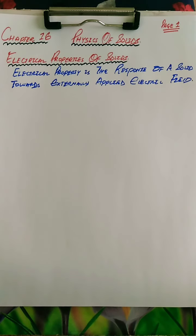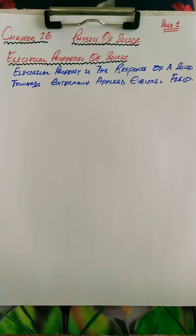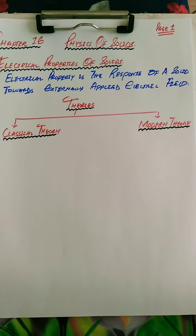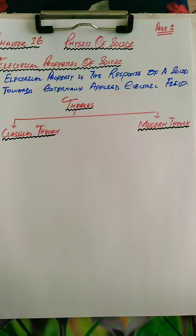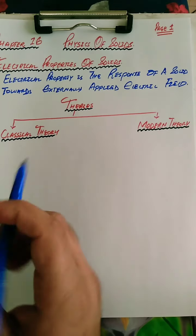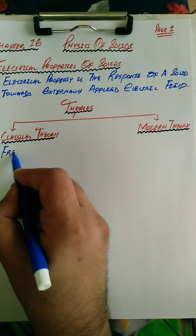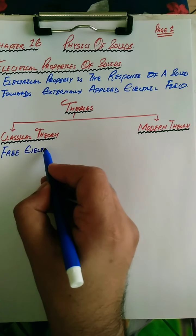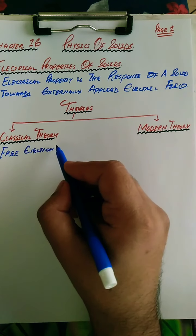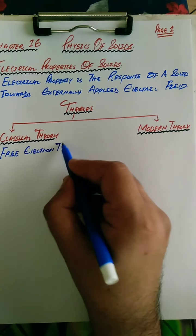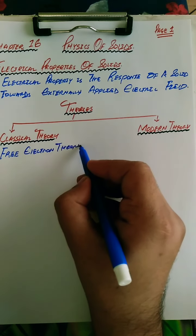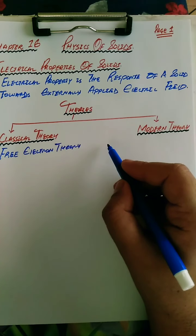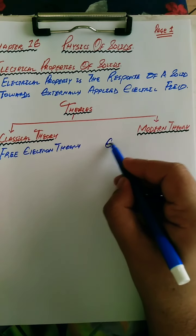In these theories, both classical theory and modern theory are available. The most famous classical theory is the free electron theory, and the most famous modern theory studied at your level is the energy band theory.